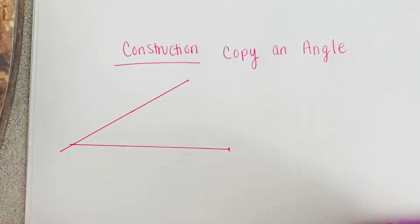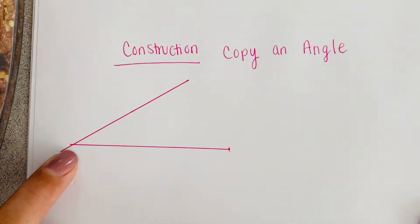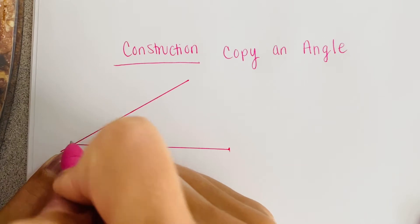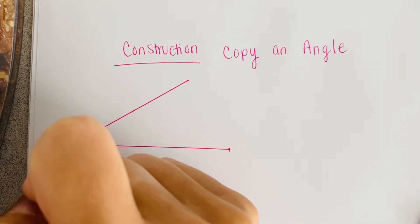It should be an acute angle. That vertex is a point and we're going to call it point A.